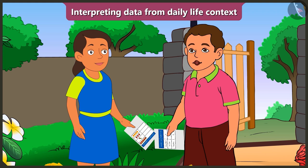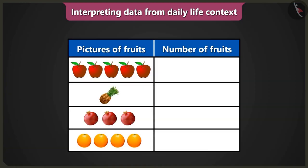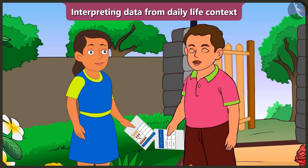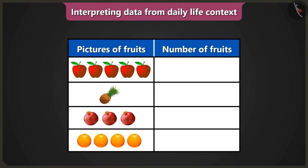Now show me the second table which Mummy has given to you. Here it is. There are only pictures of fruits in this table — the number of fruits are not written. So what will you do now? I will go to the kitchen and count the number of fruits and come back. You do not have to go anywhere. All the data has been shown in this table. Look — which pictures are there in the column of fruits in the table?